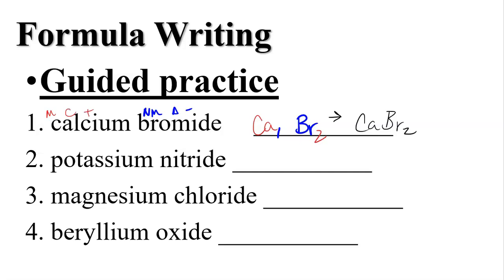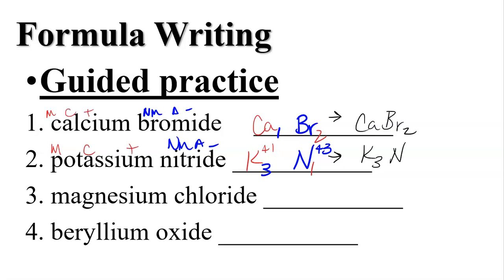Next, potassium nitride. Potassium is your metal, a cation, positive. Nitrogen is a nonmetal, an anion, negative. Potassium symbol is K and it has a charge of plus one. Nitrogen has a charge of minus three. Crisscross: nitrogen gets that one, and potassium gets nitrogen's three. We have K₃N — potassium nitride.